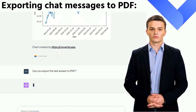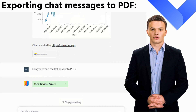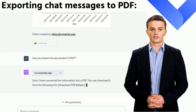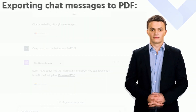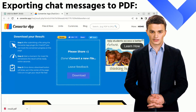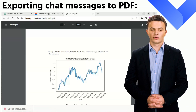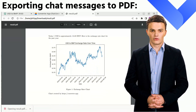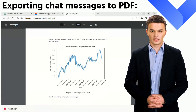Want to save the result of this conversation as a PDF? No problem. Just ask ChatGPT and it will use the Converter App plugin to do so. This demonstrates how you can use the Converter App plugin to export chat messages to PDF. Once you've sent the request, ChatGPT will supply you with a link directing you to the download page where you'll be able to access the newly created PDF. Simply click on the download button to obtain your conversation in PDF format.